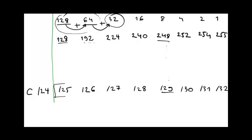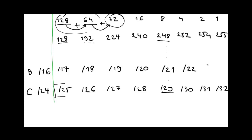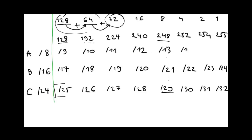Now let's complete our table for Class B and Class A. In Class B, the subnet mask starts at /16, so adding one more bit gives /17, adding another gives /18, and so on up to /24. For Class A, the subnet mask starts at /8, so the next values are /9, /10, /11, /12, /13, /14, /15.